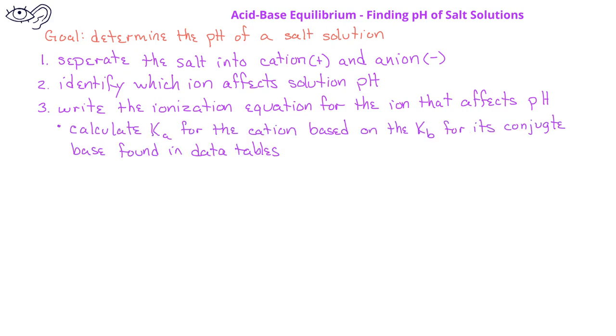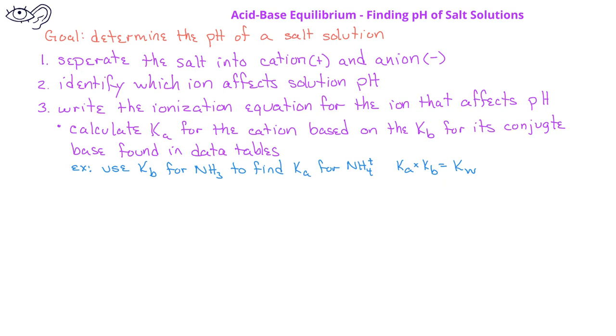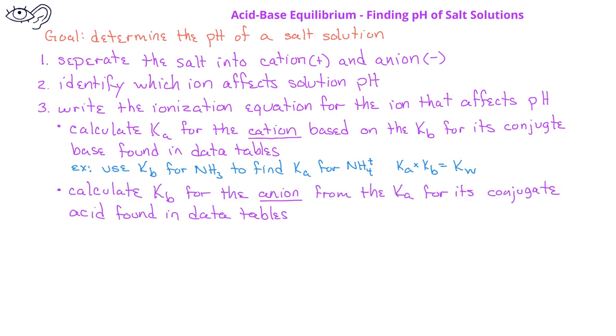Next, we'll have to look up the acid ionization constant for the cation based on the base ionization constant of the weak base. You'll do this using the relationship between Ka and Kb that we learned in another video. For example, we'll use the Kb for NH3 to find the Ka of the ammonium ion, NH4+. Alternatively, we could find the base ionization constant for the anion that affects pH using the Ka for the conjugate weak acid.